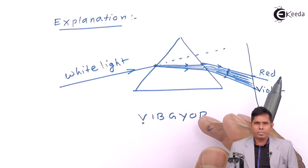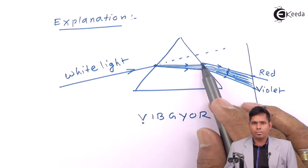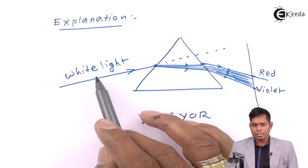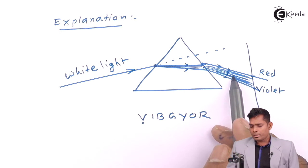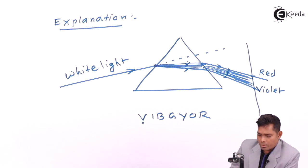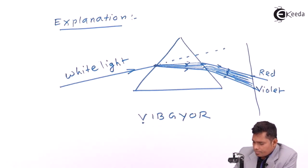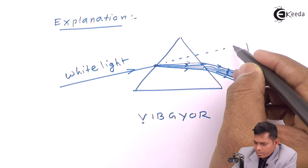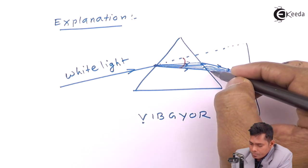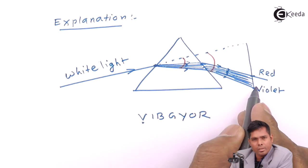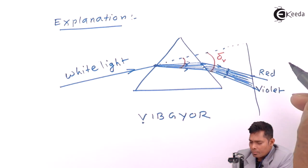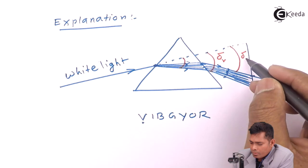The color which is bent the most is violet and which is bent the least is red. If we allow a combination of these lights, which is obviously white light, they are separated into different colors. This angle, between the violet ray and the original direction, is called the angle of deviation for the violet ray. And for the red, this angle is called the angle of deviation for red color.